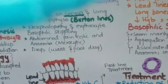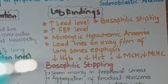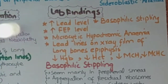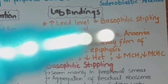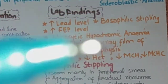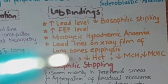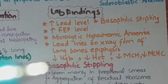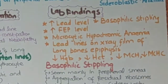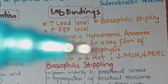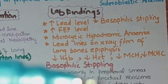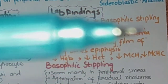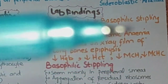The lab findings include: increased lead level, increased basophilic stippling, increased free erythrocyte porphyrin level, microcytic anemia with decreased MCV less than 85 fL, hypochromic with decreased hemoglobin, decreased RBC, and decreased oxygen-carrying capacity of the blood. Lead lines on X-ray film at the long bone epiphysis. Also decreased hematocrit, decreased MCH (mean corpuscular hemoglobin), and decreased MCHC (mean corpuscular hemoglobin concentration).